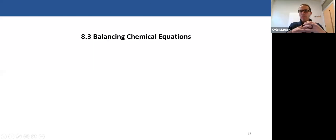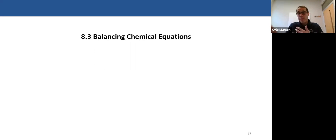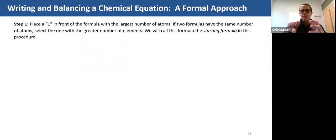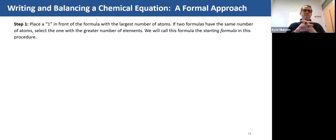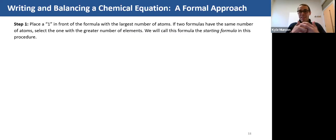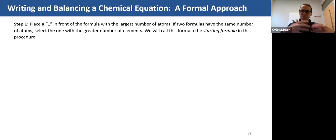In our last video we ended off just determining if a chemical equation was balanced or not. So in this video we want to balance those chemical equations. Here are the steps for balancing chemical equations using a formal approach. I might balance them slightly differently as I go through, but this is what I believe is found in your textbook, and I'll try to stick as close as I can to this method so that it's consistent.